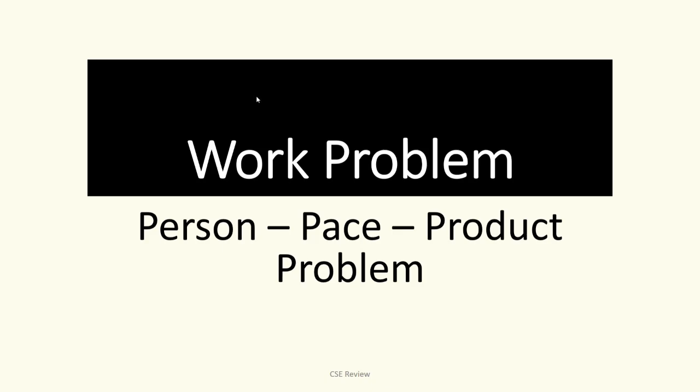Okay, so this is what we call the work problem. It usually has three components: people, which is how many people are in the work problem; pace or rate, which is how much they complete in one hour, two hours, or whatever; and then the product, which is how many mats were woven, how many baskets were made, how many cars were painted, or anything like that.